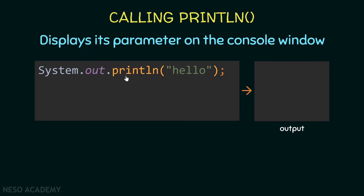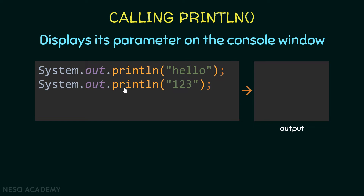First, forget about System.out for now — we'll talk about that in a bit. Just focus on println. To call a method we put the name of the method followed by its parameters. Here the method name is println and between parentheses we give it a string. Java developers wrote this method to display whatever we give it as a parameter. For example, passing '123' as a parameter should print that string.